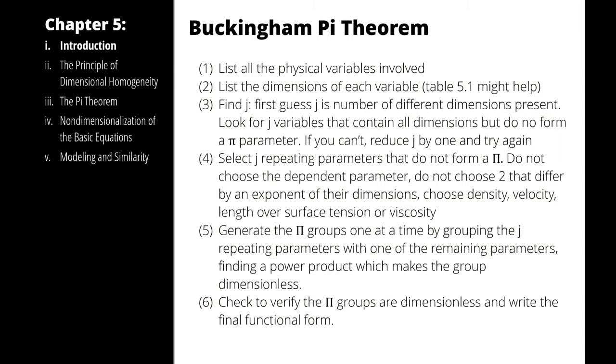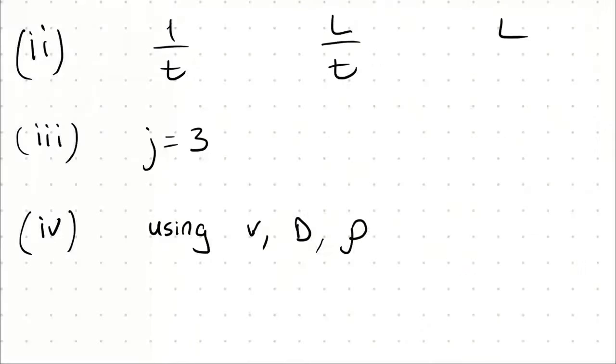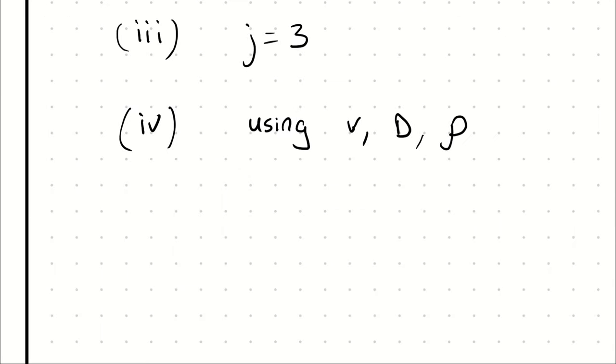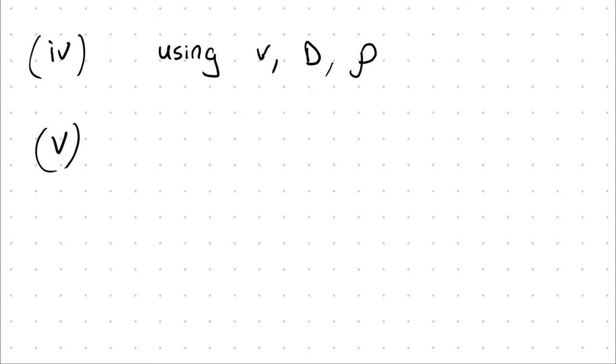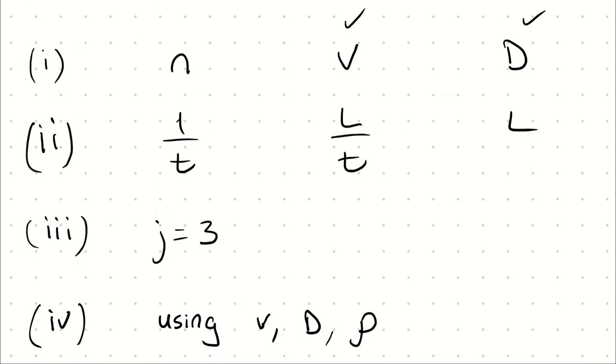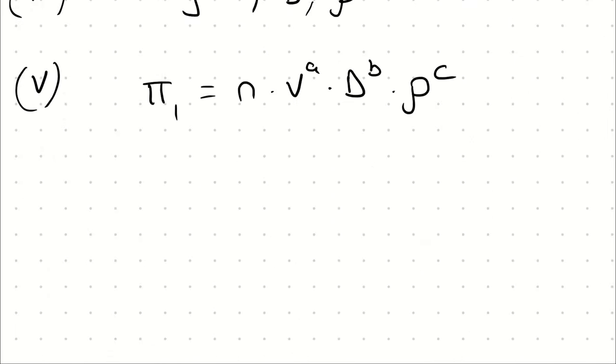Step 5 is to generate the pie groups one at a time, one for each non-repeating parameter. Since I have five total variables, three are repeating, that means two are non-repeating, therefore I should have two pie groups. Pie group 1 would be generated using the first non-repeating parameter. If you've been following along with the previous example problems, you probably have a good idea how to proceed. Why don't you pause the video here, try to generate the first pie group on your own, and see if you are correct.